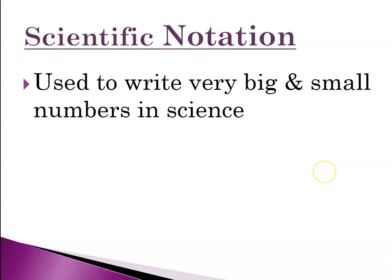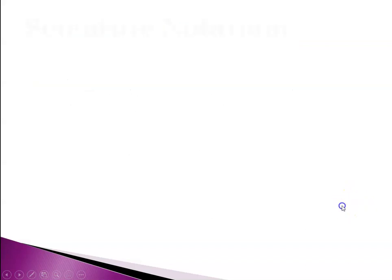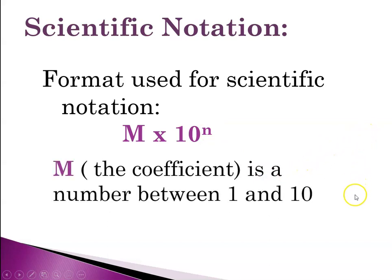So first of all, scientific notation is used for very big and very small numbers in science. And using scientific notation, a number is written as the product of two numbers. So let's look at the format used for scientific notation: m times 10 raised to the n power, where m is the coefficient, and that's a number between 1 and 10. This is important to put things correctly into scientific notation. There's only one digit to the left of the decimal point, and n is an integer.